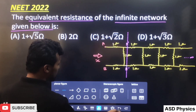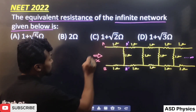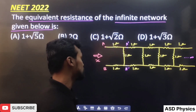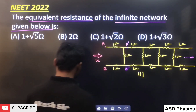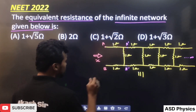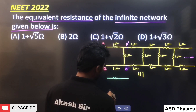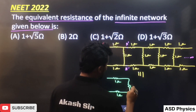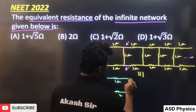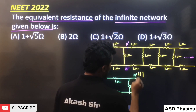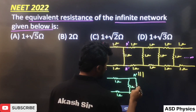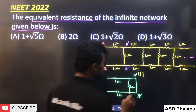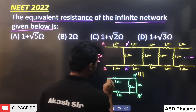So, what we have understood: if the equivalent resistance between point A and B is X, then the equivalent between point A dash and B dash will also be X. That means, we'll draw one equivalent network. The equivalent resistance across A dash and B dash is also X.